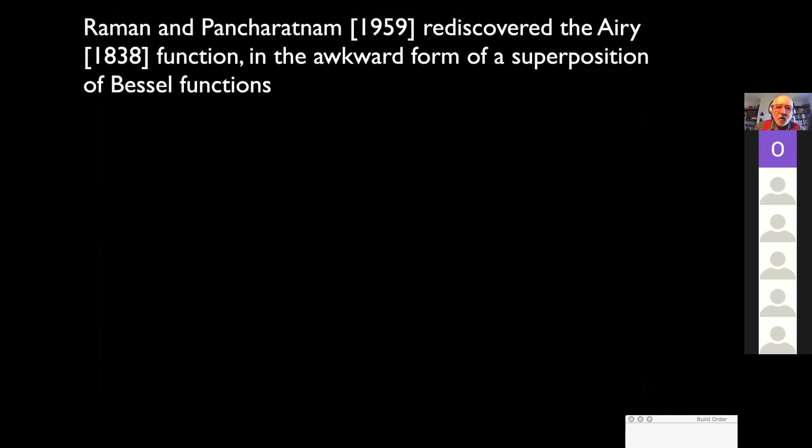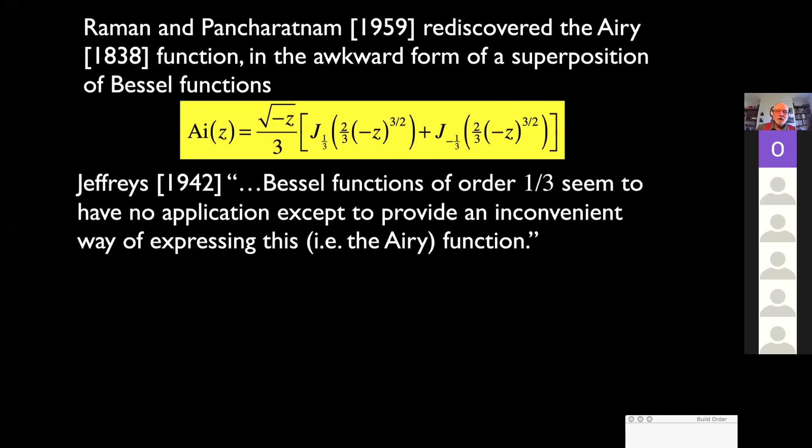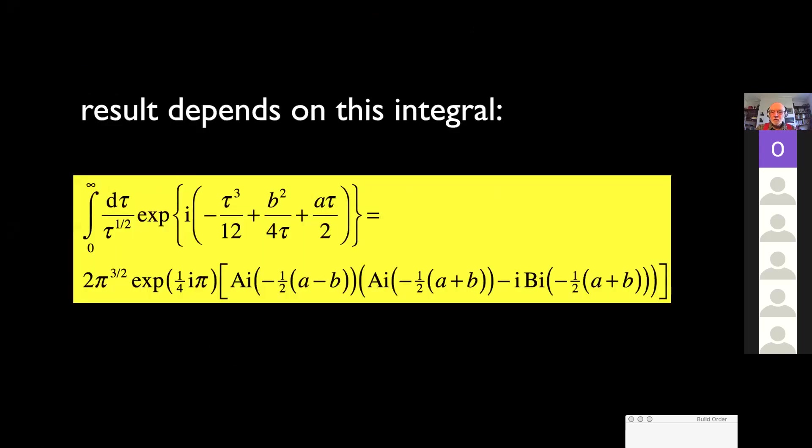In experiments in the lab with undulating bathroom window glass, you can see beautiful caustics. And the Airy function is everywhere. There it is. It's ubiquitous. Now, they rediscovered it in a very awkward form, a superposition of Bessel functions. This is the same function. But it's rather strange that the Airy function was very well known by the time that they wrote their paper. But still, they used this correct but awkward superposition.